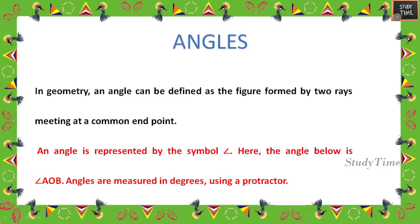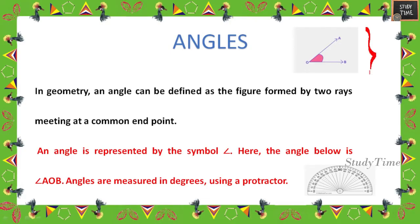In geometry, an angle can be defined as the figure formed by two rays meeting at a common endpoint. So here, this is one ray and this is one ray, forming angle AOB. That is called an angle.